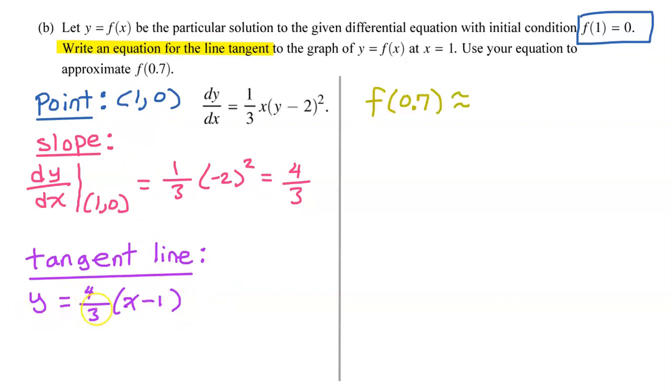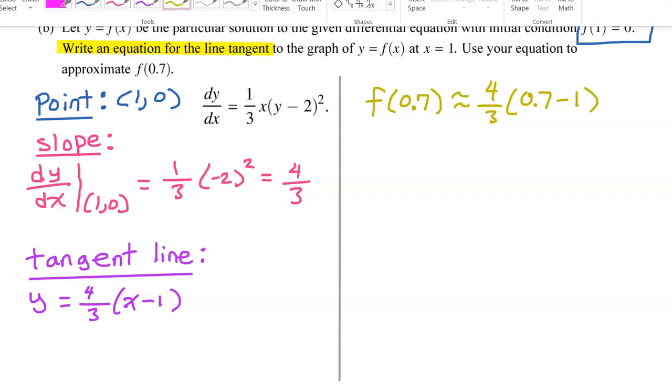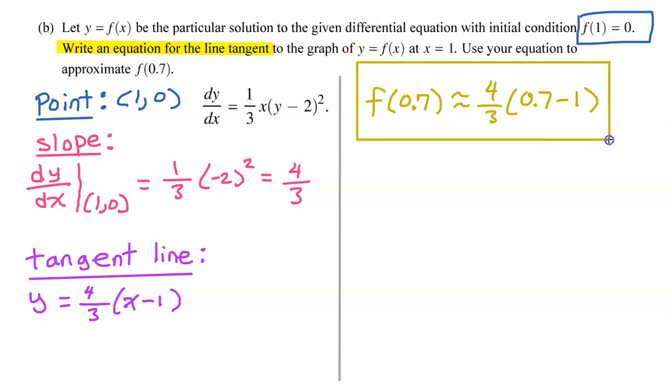We can use this equation to approximate f(0.7). f(0.7) is approximately equal to 4/3 times (0.7 minus 1). And guess what? This is a perfectly acceptable answer for the AP exam. If you wanted to simplify this further, you could remember that 0.7 is the same thing as 7/10. And the number 1 can be written as 10/10.